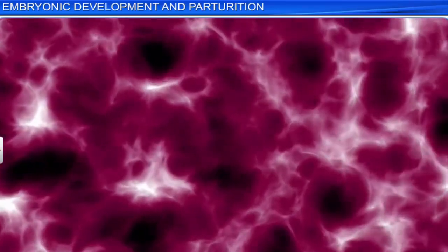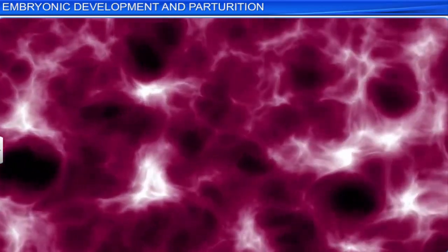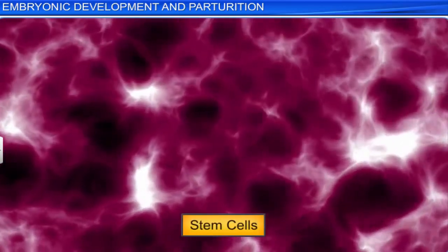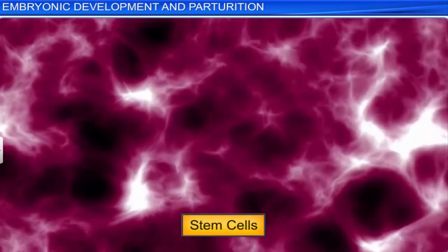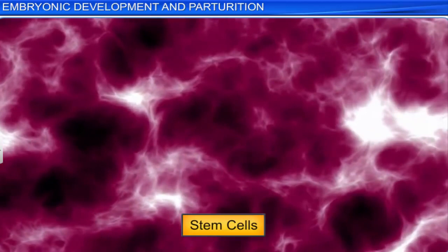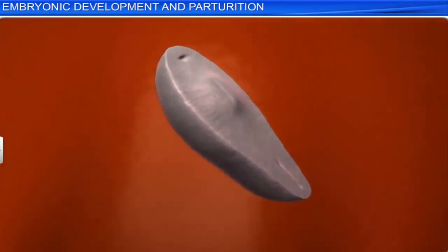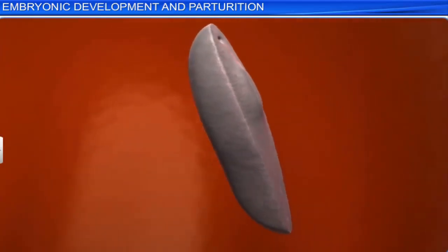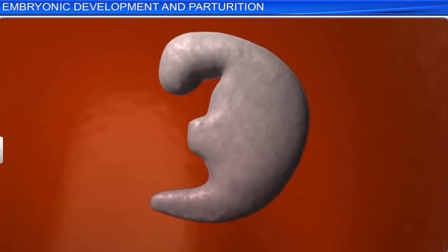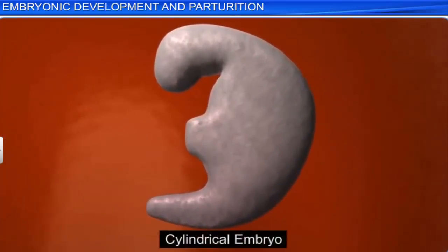Apart from the three germ layers, the embryonic disc also contains certain cells called stem cells, which have the ability to give rise to all the tissues and organs present in the human body. As the embryonic disc grows, the cells of one side of the disc grow faster than those on the other side, causing the disc to roll and form a cylindrical embryo.